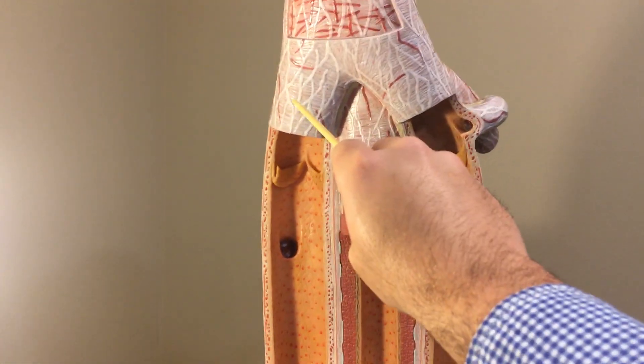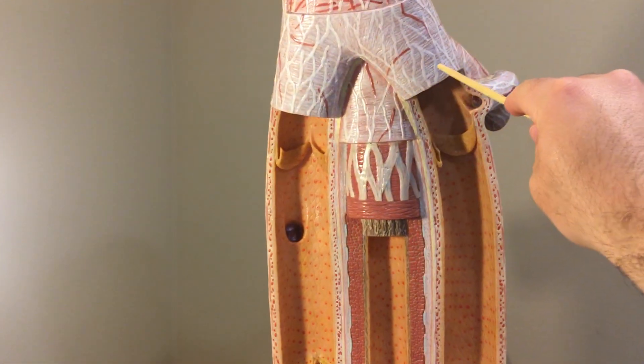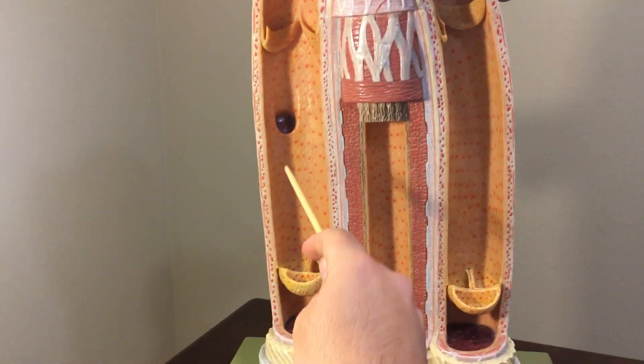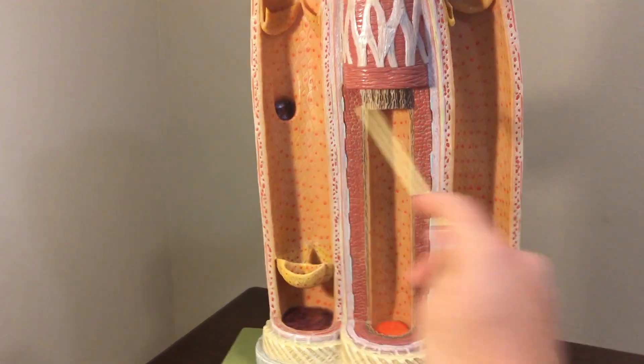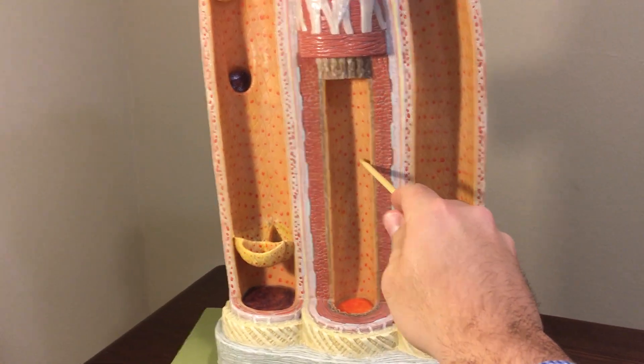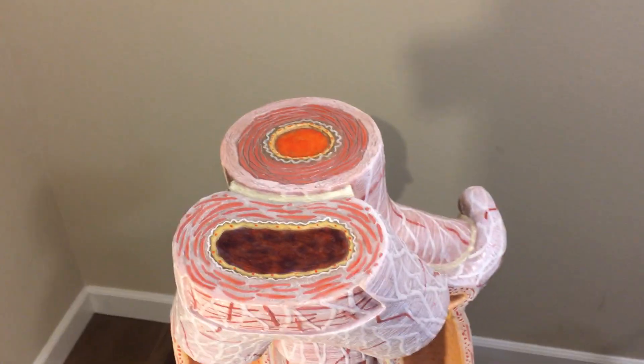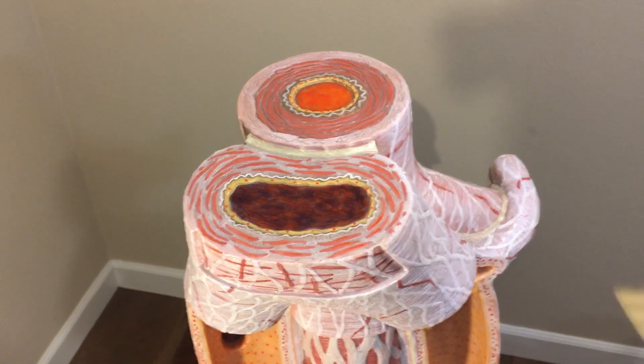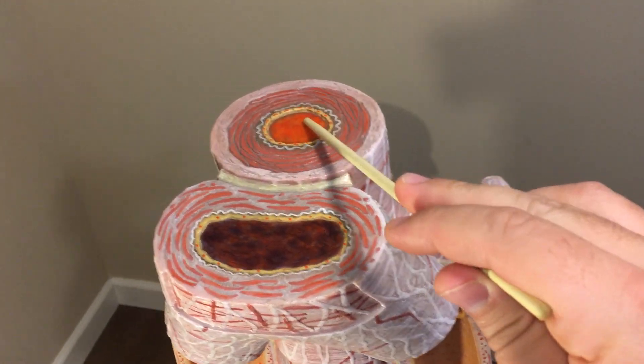This model shows two veins right here and an artery in the center. Here we're seeing one of the lumens of the veins and another lumen of a vein, and then the lumen of the artery. You can recognize that a little bit better if you have a view from this side right here, a superior view, and we're seeing the lumen of the artery right here.